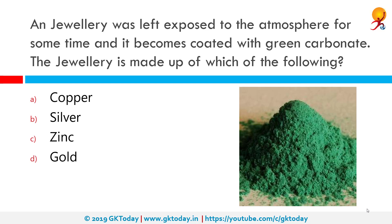Jewelry was left exposed to atmosphere for some time and became coated with green carbonate. The jewelry is made up of which of the following? The correct answer is copper. This green substance is copper carbonate. Verdigris is the common name for the green pigment obtained through the application of acetic acid to copper plates, or the natural patina formed when copper, brass, or bronze is weathered and exposed to air or seawater over a period of time.